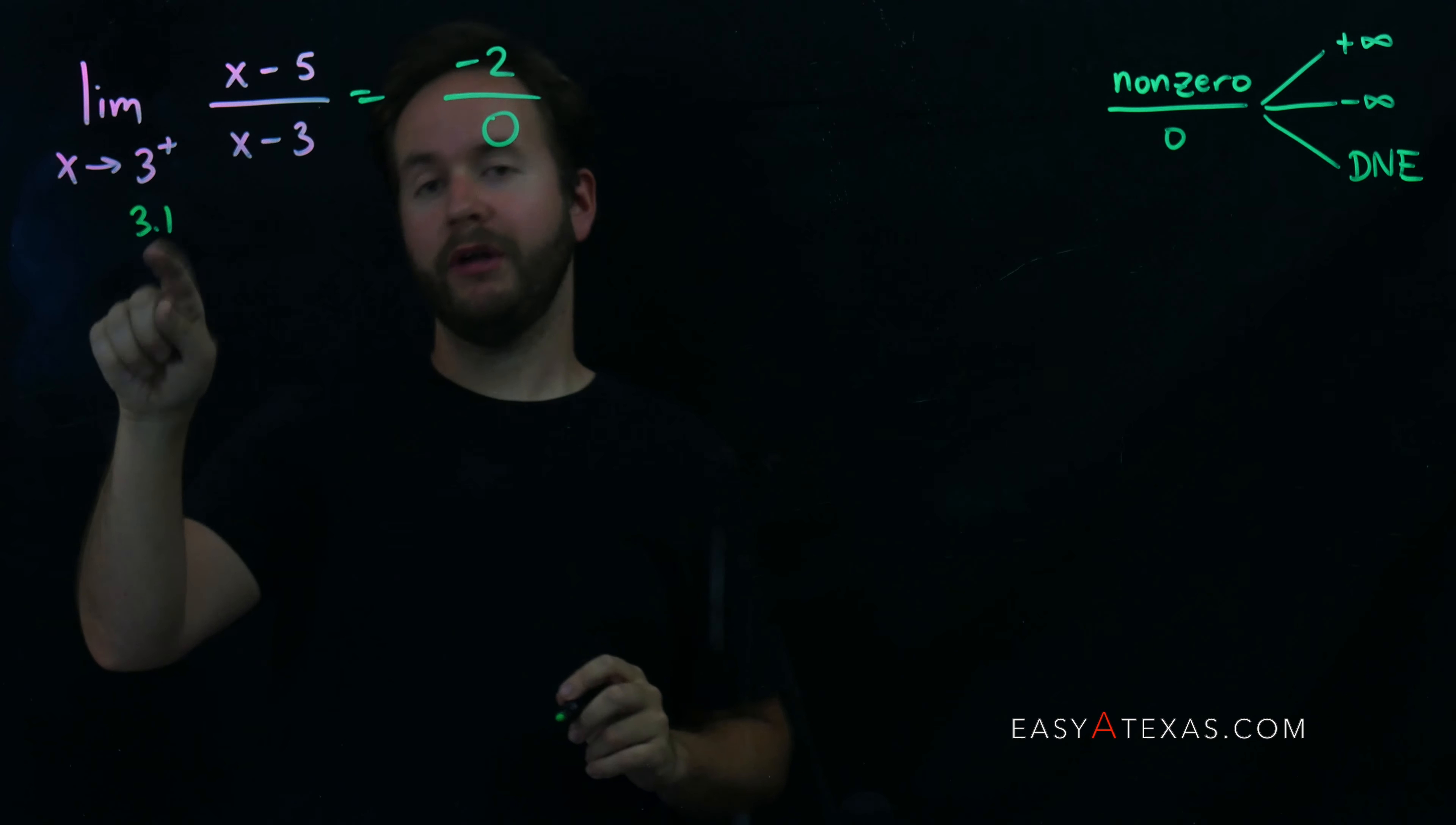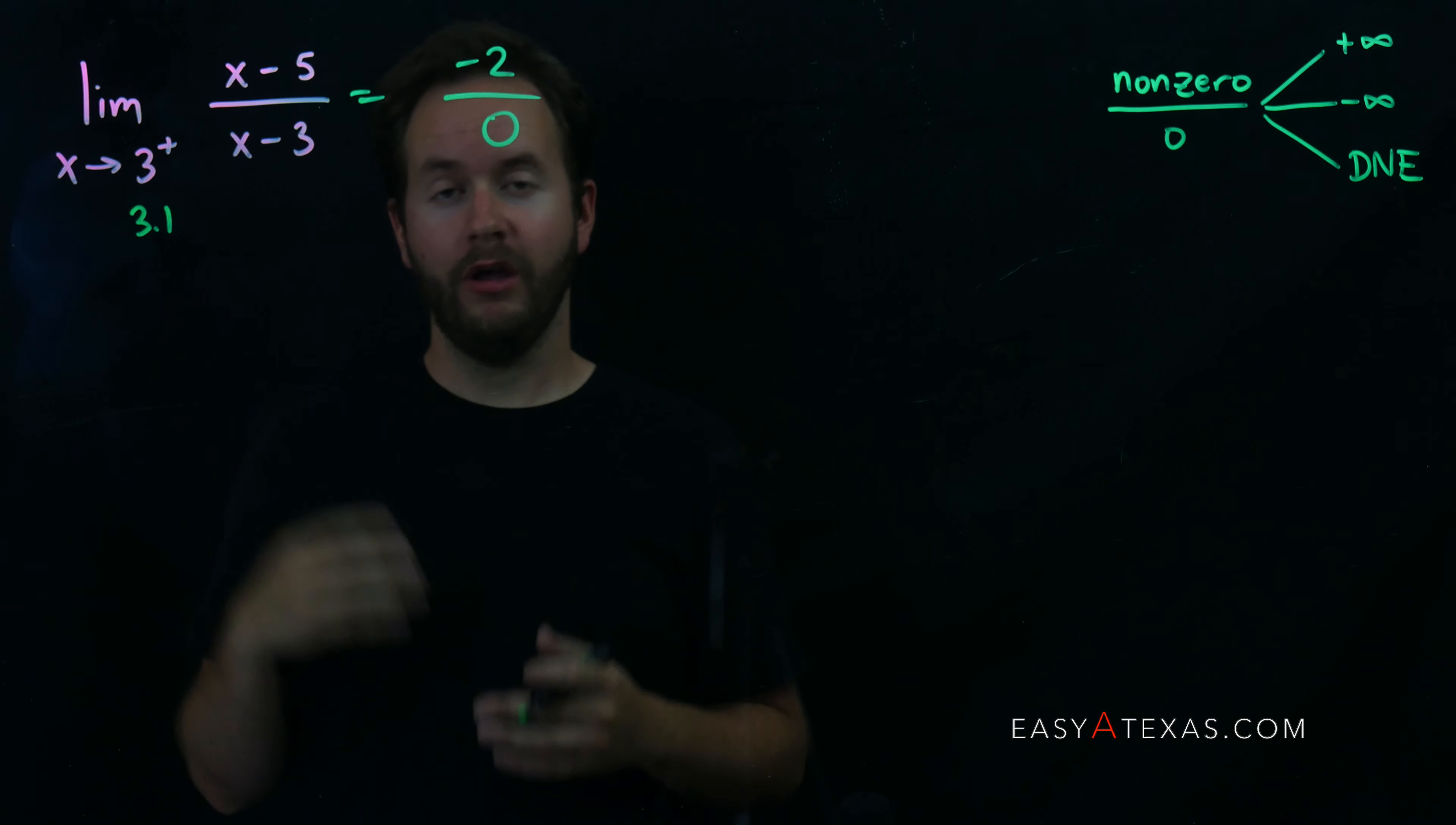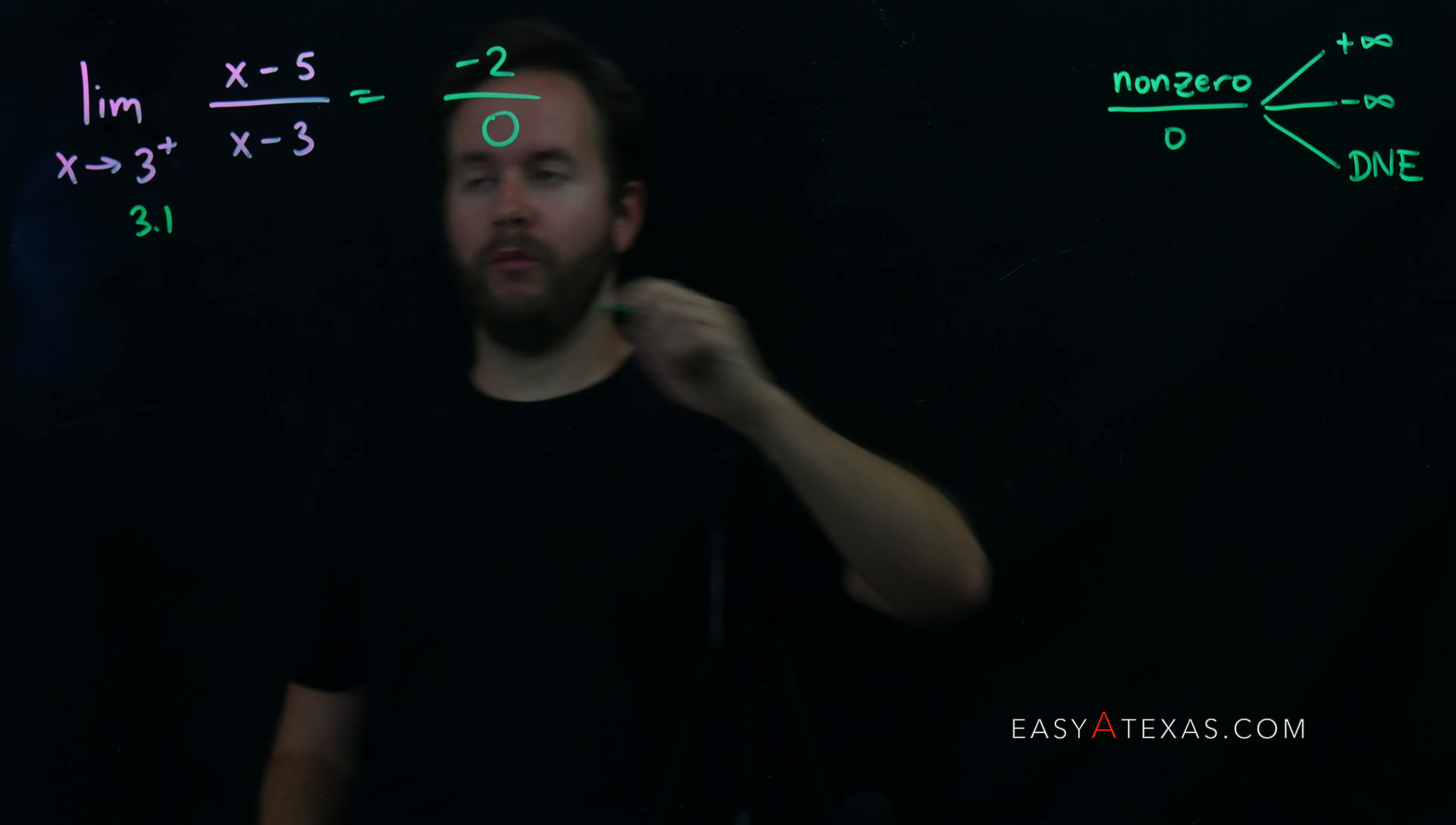We're going to re-plug in, but this time we're going to plug in 3.1 and ascertain the sign of the result. That is to say, if I plug in 3.1 into this expression, what sign am I going to get, positive or negative? That will determine whether or not I have plus or negative infinity. Let's go ahead and plug in 3.1.